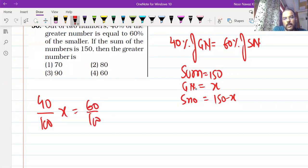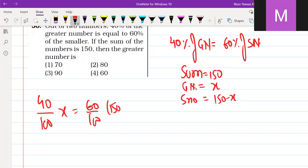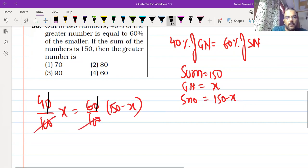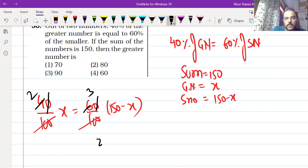So this will be 40% of x equals 60% of 150-x. 2x is equal to 450 minus 3x.